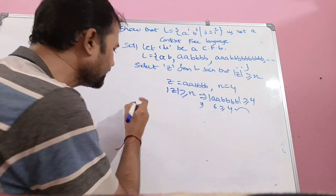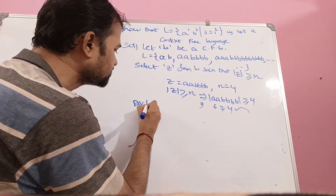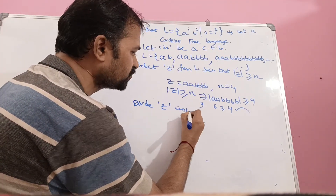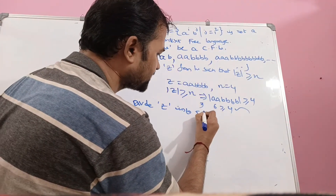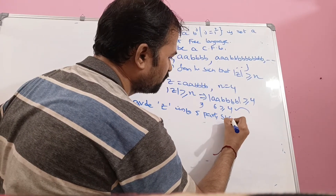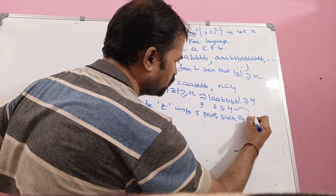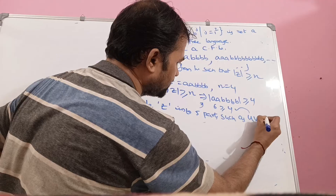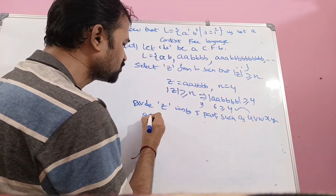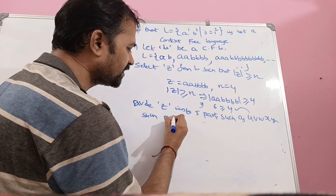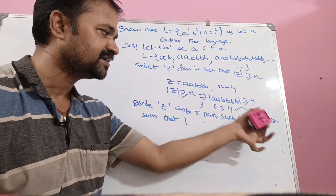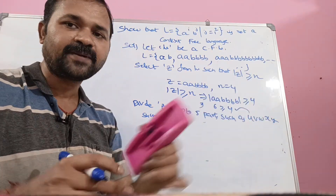Next, what we have to do is divide the string z into 5 parts: u, v, w, x, y. We must divide z into these 5 parts by satisfying 2 conditions. If these 2 conditions are satisfied, then only we can say that these 5 parts are correct.